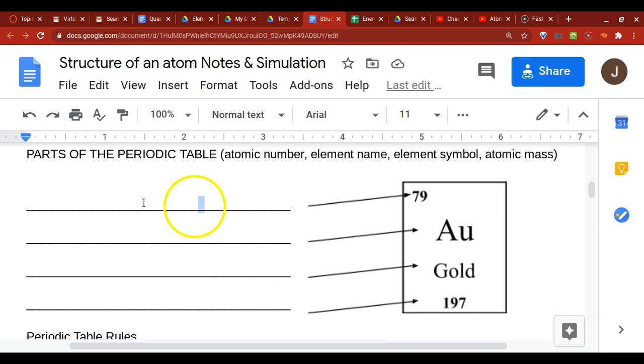So this first number at the very top is always the atomic number. And the atomic number gives us important information. It tells us the number of protons and number of electrons that make up an atom.